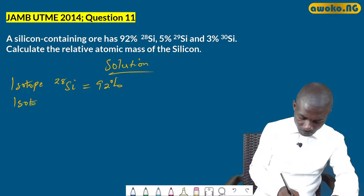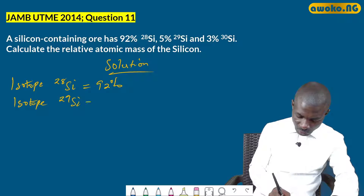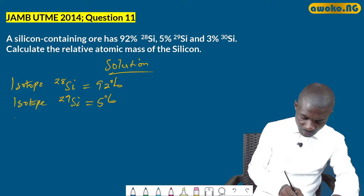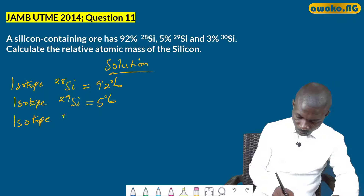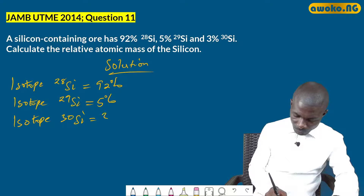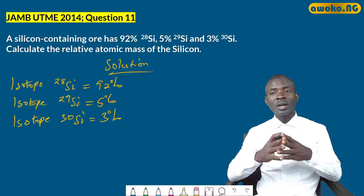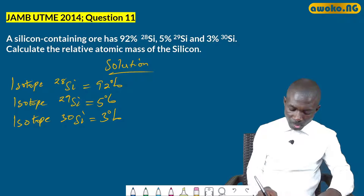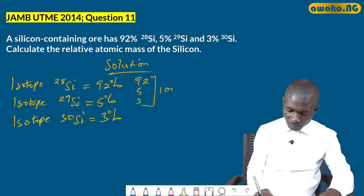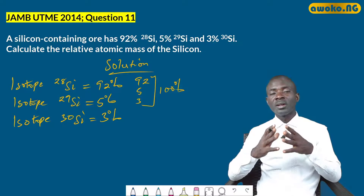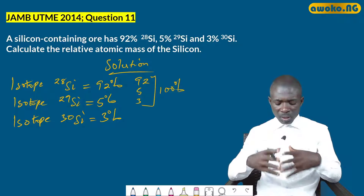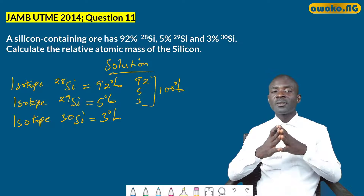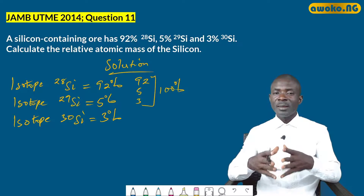Adding the percentages: 92 + 5 + 3 = 100%, confirming silicon exists as 100% of these isotopes. To calculate the relative atomic mass of silicon, we use the percentage abundance and the mass numbers of each isotope. Isotopes have the same atomic number but different mass numbers: 28, 29, and 30 respectively.